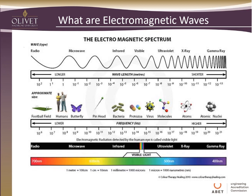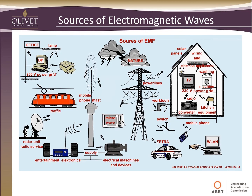Since we'll be discussing electromagnetic waves, here's a quick primer on the spectrum. Wavelengths range from football-field sizes down to the scale of molecules — spanning microwave, infrared, visible, ultraviolet, and X-ray. We'll also look at sources of electromagnetic waves: some cause interference, some are beneficial, which makes for interesting design challenges.